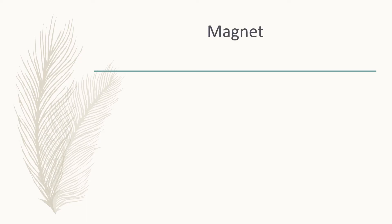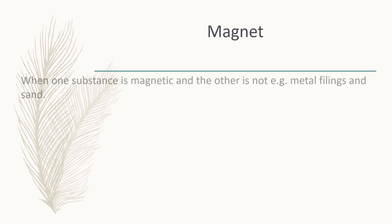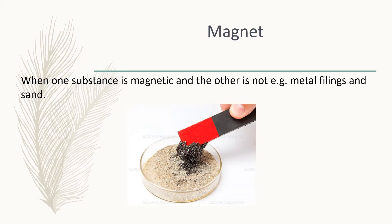The next method of physical separation is that of a magnet. To be able to use this method of separation it is necessary that one substance is magnetic and the other is not. A magnet is used to attract the magnetic substance and remove it from the other substance. For example, when you want to take iron filings from sand.